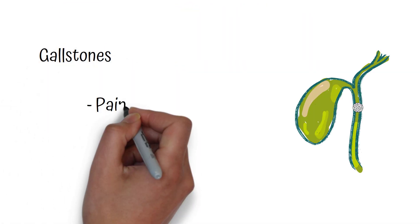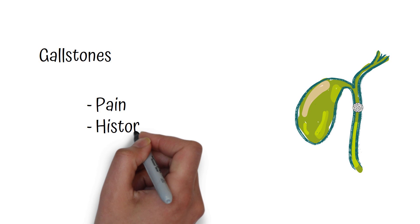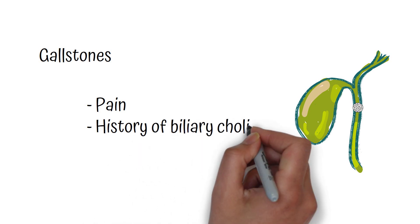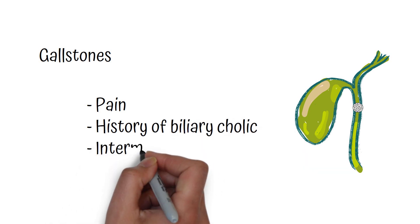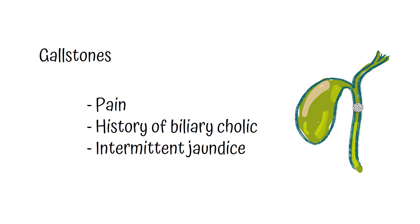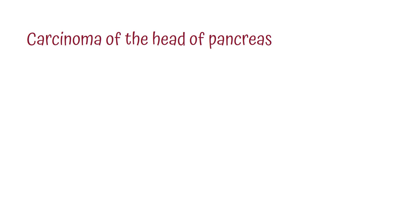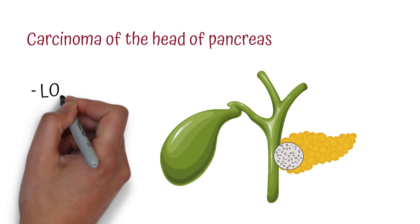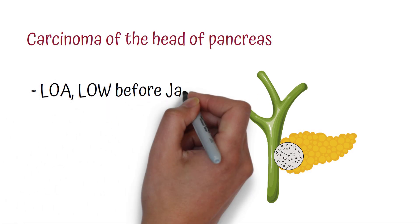In gallstones, the patient will have pain and a history of biliary colic, and they will also have intermittent jaundice. This is because the stone moves when the bile duct contracts, allowing some bile to pass, so the jaundice will be intermittent.